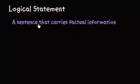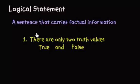A logical statement is a sentence that carries factual information. With that we have two assumptions. The first assumption is that there are only two truth values, which we call true and false.